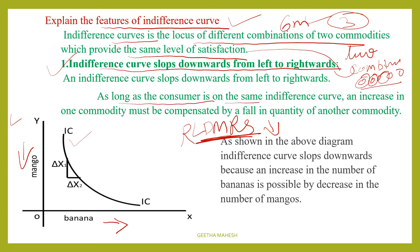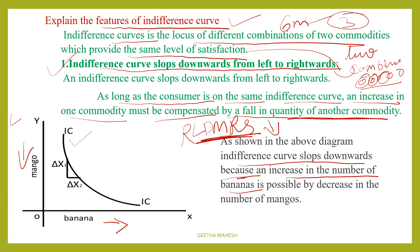As long as the consumer is on the same Indifference Curve, an increase in one commodity must be compensated by the fall in the quantity of another commodity. Diagram 1: you have to understand the demand curve downwards slope. To increase the number of bananas, it is possible by decreasing the number of mangoes. If you want to increase the same quantity of bananas, you will move on to the next Indifference Curve.